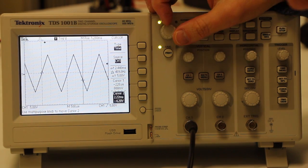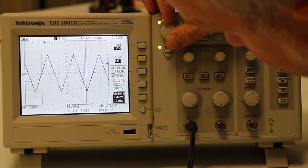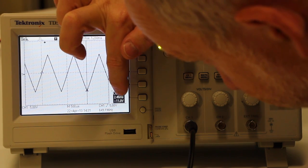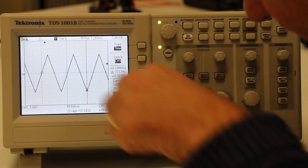You can move one of them around, say to work out where the dip is here. In this case, cursor two we're manipulating, which is at 2.46 milliseconds.